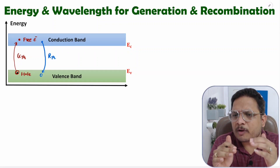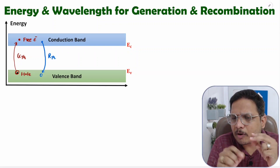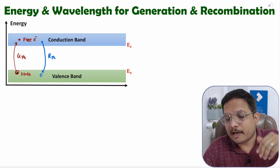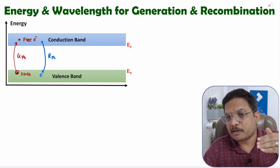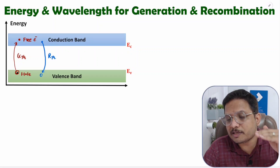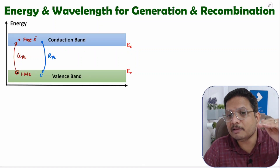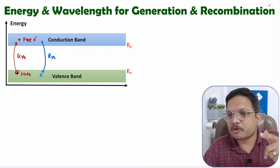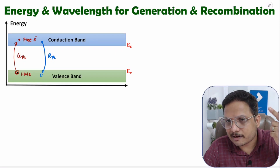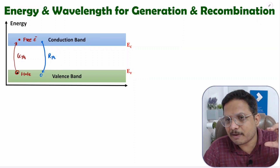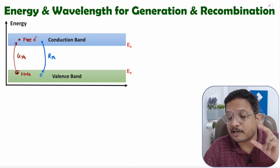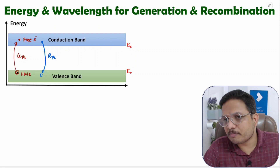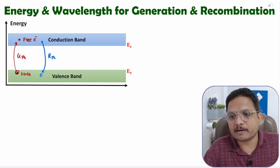Now you have a fair enough idea about what generation is. Generation means electrons are absorbing energy, and those electrons which are in the valence band will move inside the conduction band — those are free electrons in the conduction band. Inside the valence band, the vacant space is referred to as a hole. That is how generation and recombination take place inside semiconductor material.